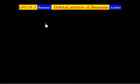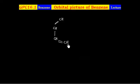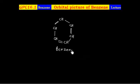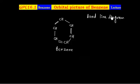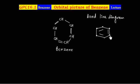In this lecture we will discuss the structure of benzene. The benzene molecule is CH double bond CH, single bond CH, double bond CH, single bond CH. This is the benzene molecule. If I write the bond line diagram for the same molecule, we will have this bond line diagram. At each carbon we have one hydrogen that is not shown here, so each carbon contains one hydrogen.